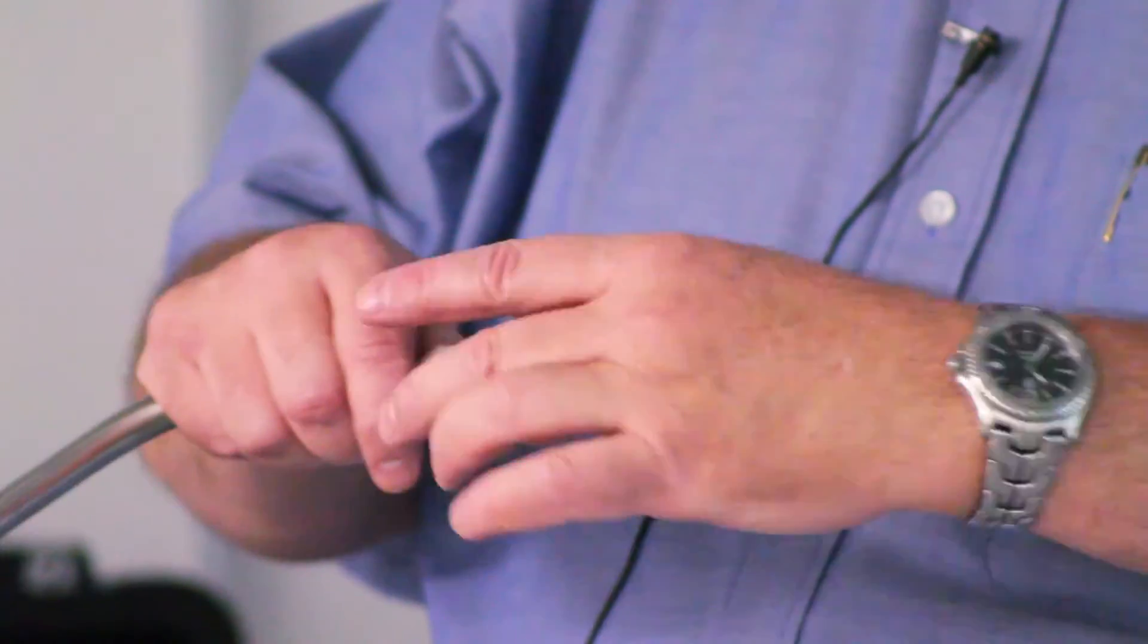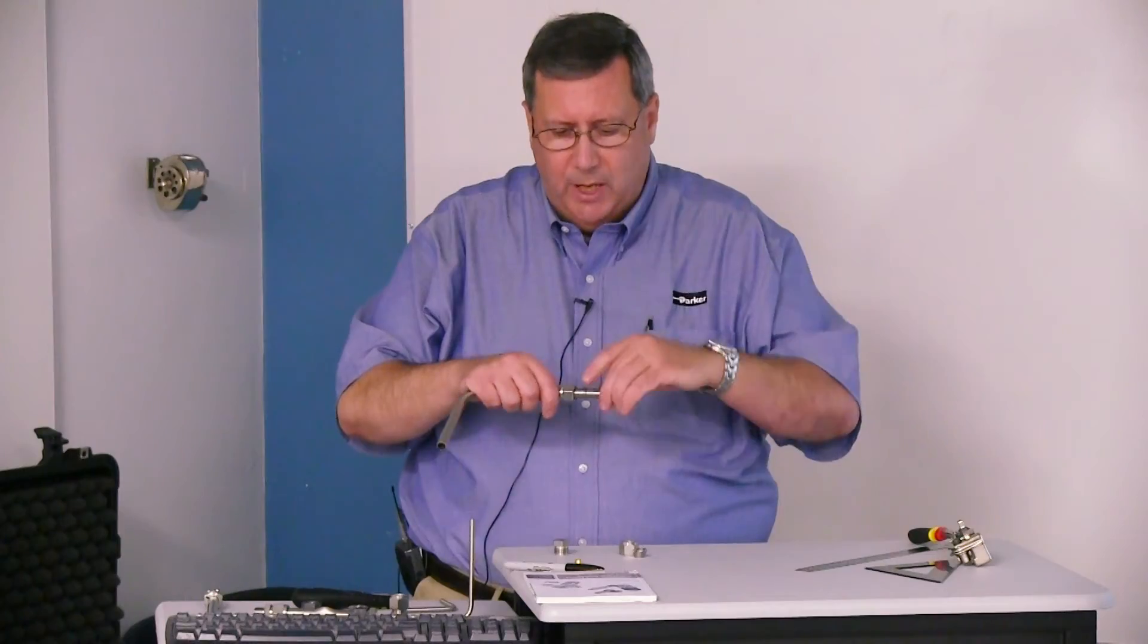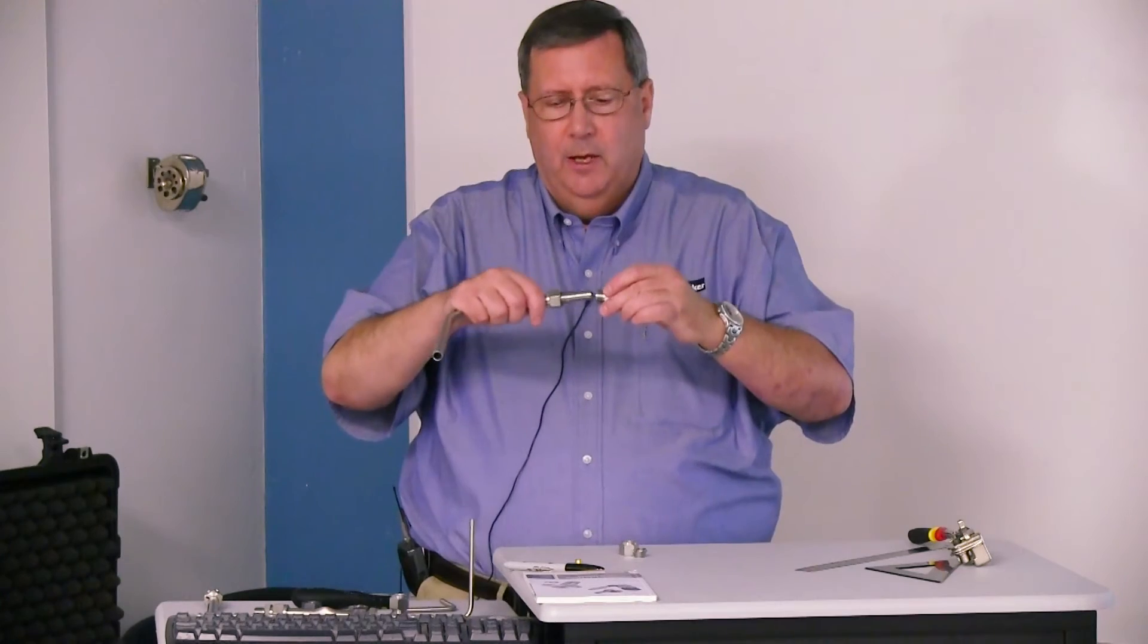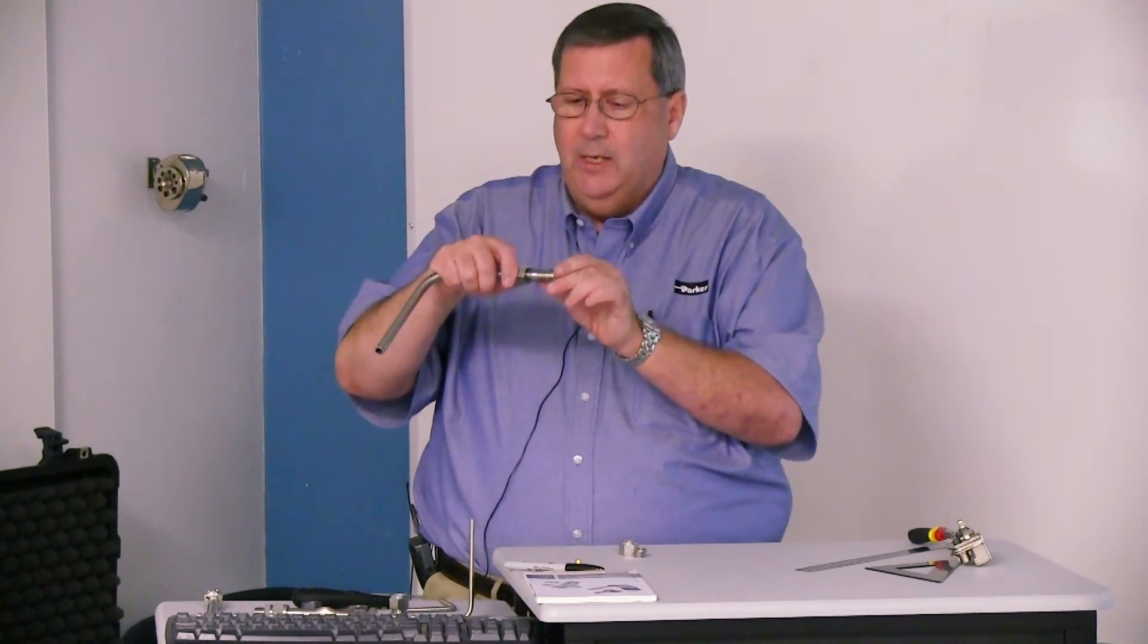then put the rear ferrule on, then the front ferrule, and use that little piece of tubing as a pilot. Put it in the fitting body - or this could be the actual piece of tubing you fabricate. Take a look at that.